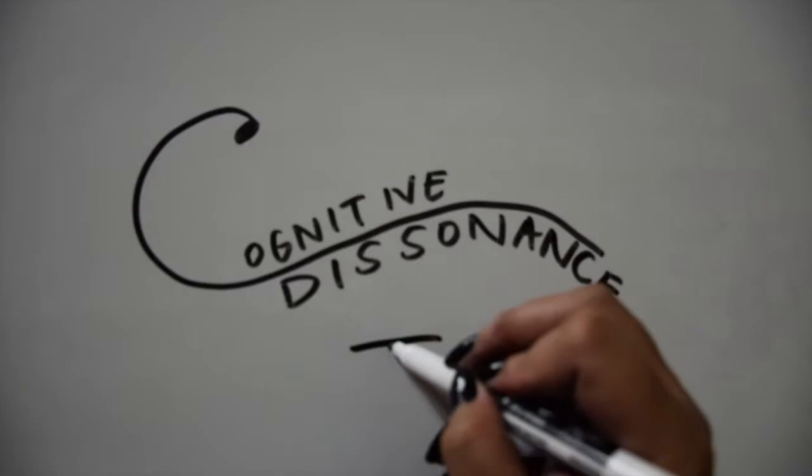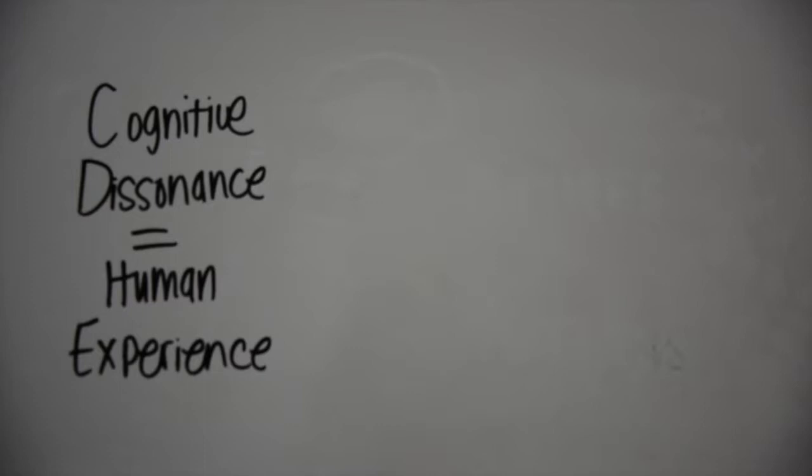Let's talk about Cognitive Dissonance Theory. Cognitive Dissonance Theory, or CDT, is a theory that helps describe the feelings of dissonance that occur when a person's beliefs differ from their actions. The concept of cognitive dissonance as a human experience was first introduced by Leon Festinger, who suggested that we have an inner drive to hold our attitudes and beliefs in harmony and avoid disharmony.